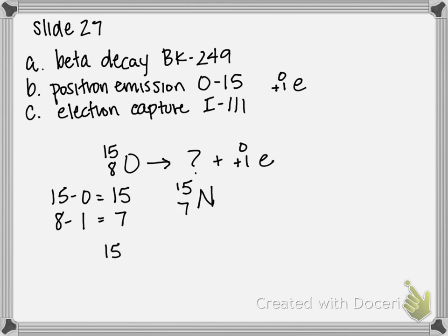So your complete balanced equation, 15 over 8 O makes 15 over 7 N plus 0 over plus 1 E. And that's how you write an equation for positron emission.